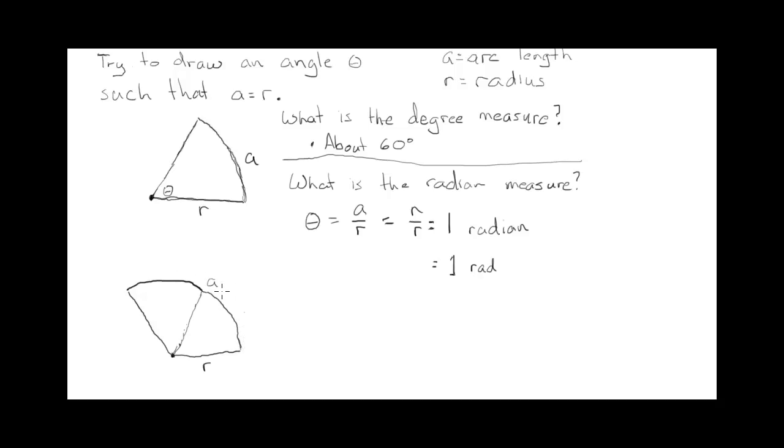So A goes from there to there. So if A equals double the radius, then you have theta equals 2R over R, which simplifies to 2. So it would kind of be close to that angle there, this angle theta here. That would be about 2 in radian measure. So this example hopefully just gives you a little bit of a feel of what a radian is.